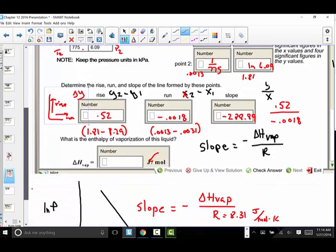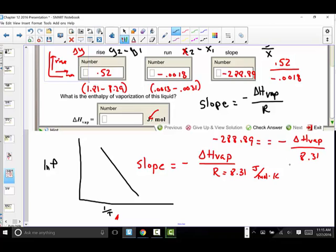Now we have the information to come down and actually solve for the heat of vaporization using the slope of the line. So the slope we found, negative 288.89, that's going to be set equal to negative our target variable, heat of vaporization, over R, the gas constant, 8.31. And that's joules per mole Kelvin. So I'm going to cross multiply. So negative 288.89 times 8.31. And when I solve for that, just cross multiplying,